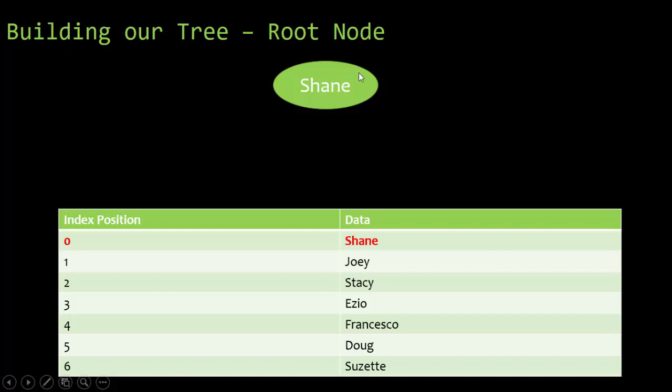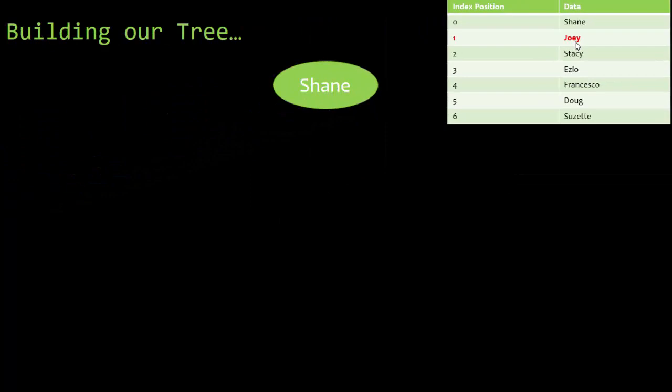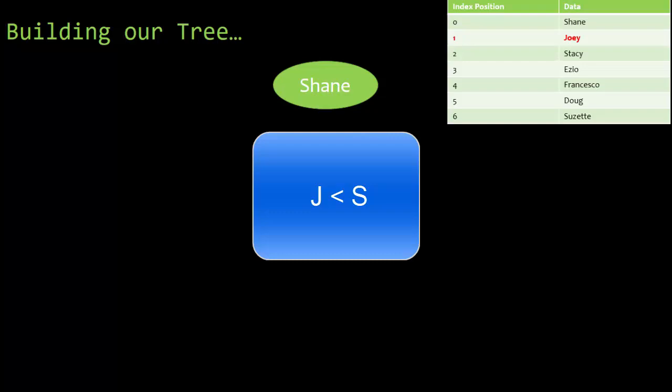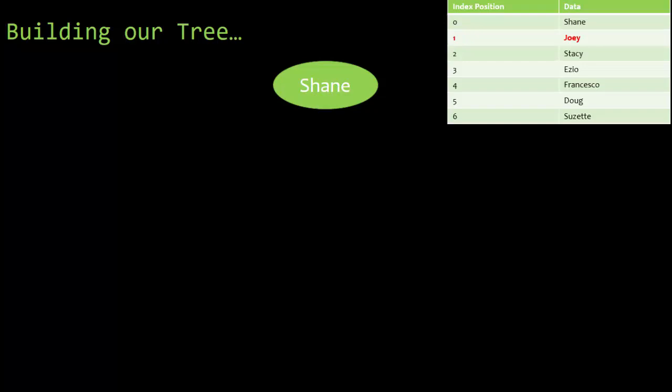There it is — that's our root node. When I look at my table, I just put in Shane. It's in the top center, and the rest of my tree is going to be built based off the root node which houses the name Shane. So the next item we have is Joey. We have to ask ourselves: is Joey less than Shane or greater than Shane? Joey is less than Shane — because in alphabetical order, capital J comes before capital S. The computer uses the ASCII code table, where capital J has a lower value than capital S. Because it's less than, it goes to the left of our tree.